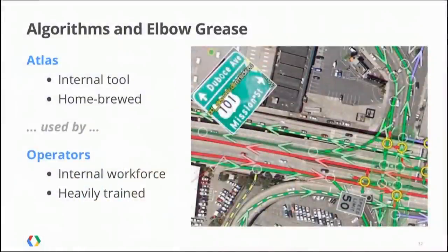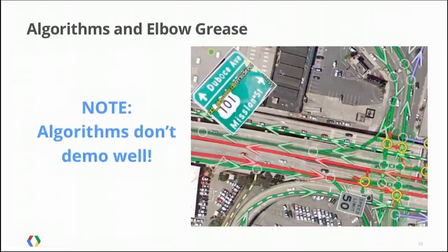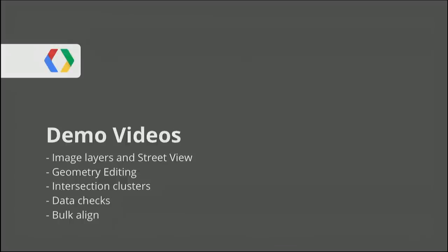To accomplish the algorithms and elbow grease part, we built a tool internally called Atlas. It's fully homegrown, unfortunately internal only. It's used by a team of what we call operators — ground truth operators — a dedicated internal workforce that goes through a huge amount of training on policies, procedures, and the tool itself, so they know how best to implement the policies that result in a high quality map. We're going to demo the elbow grease — algorithms are boring to demo — so we'll hand it over to Andrew.